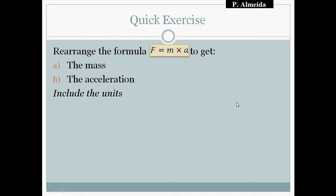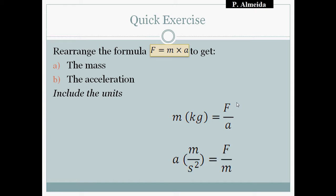If I want to rearrange Newton's second law formula — F = ma — to get mass or acceleration: mass equals force over acceleration, and acceleration equals force over mass. Mass is in kilograms and acceleration is in meters per second squared.